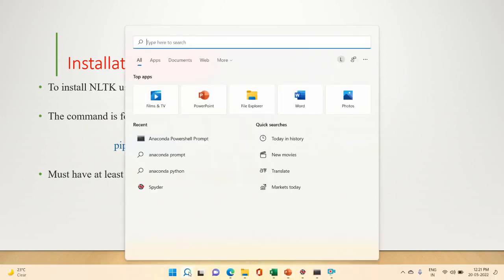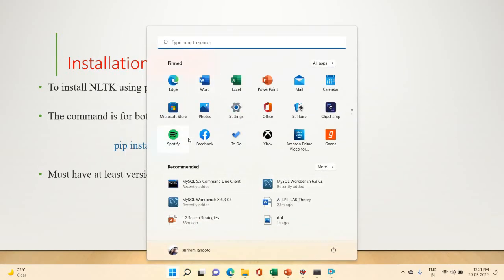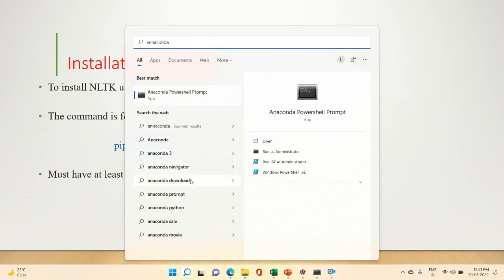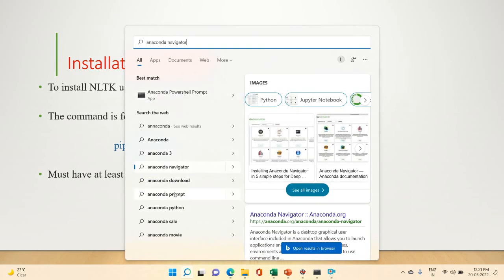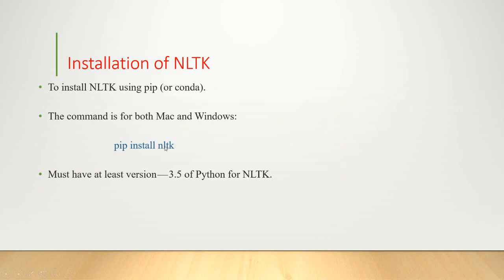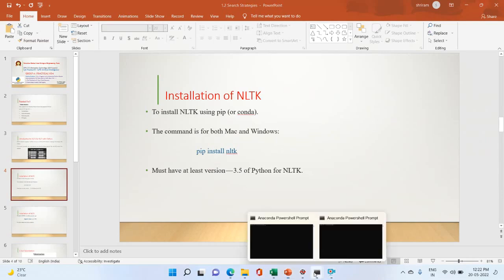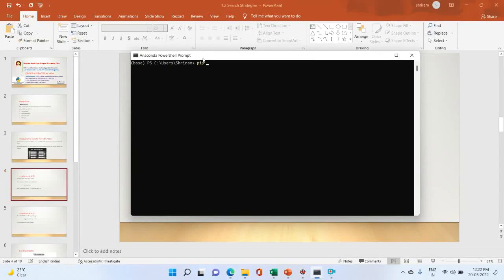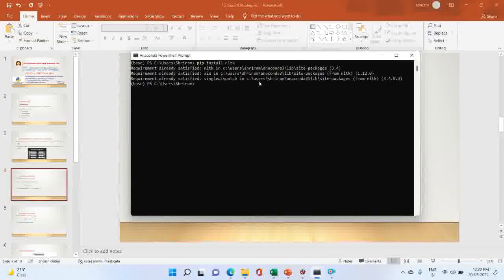Here I have Anaconda Navigator installed — you can also download Anaconda. I have the Anaconda command prompt. To install NLTK, I can use the pip command: pip install nltk. This installation can be done on Windows or Mac. Here I have a command prompt where I run the install command, and the installation will be completed.